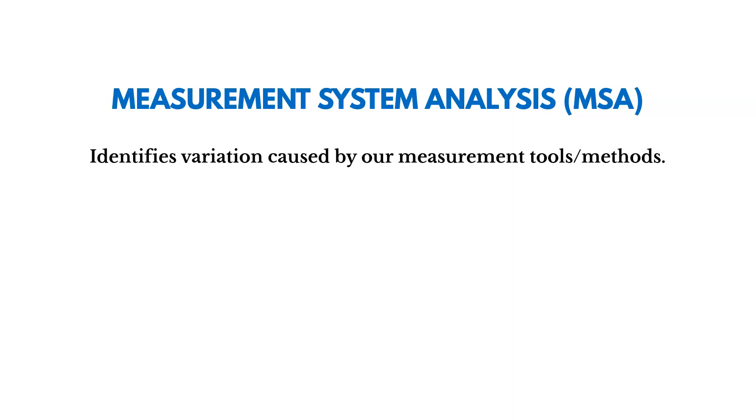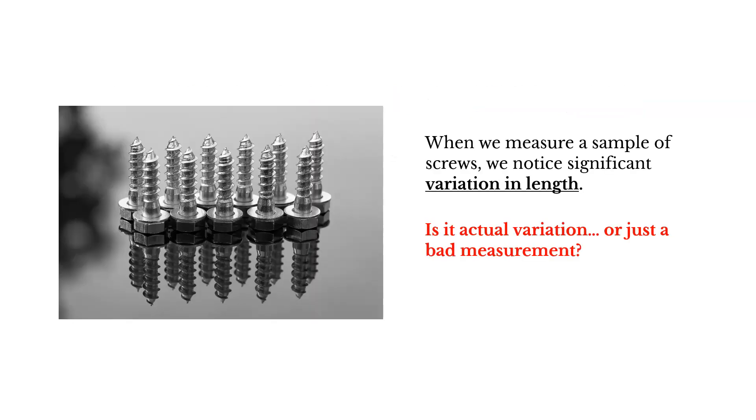So now let's talk about an overview of MSA. Measurement systems analysis helps us to identify variation caused by our measurement tools and methods. So here's an example. Let's say we measure a sample of screws, and we notice a significant variation in length. The question becomes, is it actual variation? Are there really differences in the length of those screws, or did we just get a bad measurement, a bad reading?